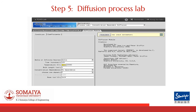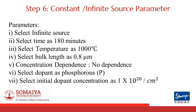This is the GUI for Process Lab Concentration Dependent Diffusion. Start with constant or infinite source diffusion. The parameters will be as follows: source is going to be infinite, time entered as 1189 minutes, temperature 1000 degrees Celsius, bulk length selected to be 0.8 micrometres, concentration dependent — select no dependence, select dopant as phosphorus, and initial dopant concentration as 1×10²⁰ per centimetre cubed.